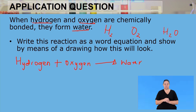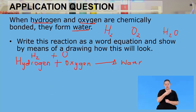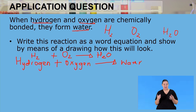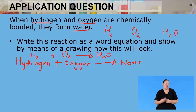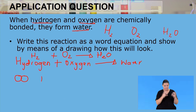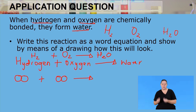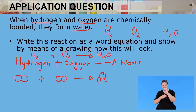Note that in this reaction, the number of atoms of hydrogen and oxygen are not equal on both sides of the equation — we will deal with balancing chemical reactions later. To complete the question, we also need a drawing. Hydrogen is a diatomic molecule — two hydrogen atoms chemically bonded together. Plus two oxygen atoms chemically bonded together. They react to form one molecule of water.